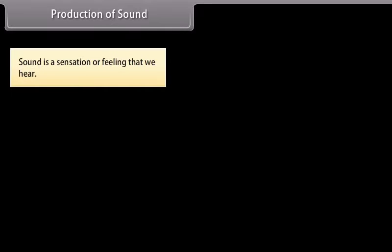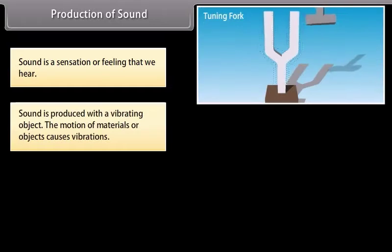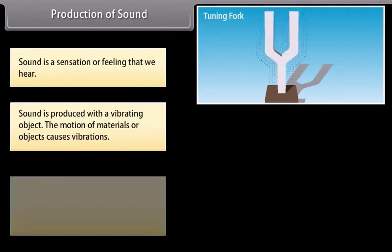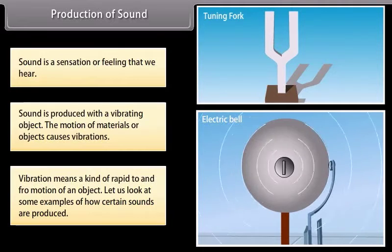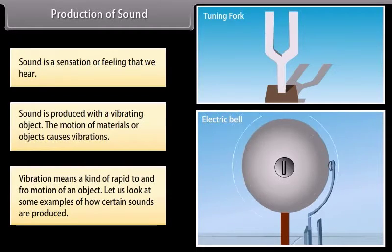Production of sound. Students, we know that sound is a sensation or a feeling that we hear. Sound is produced with a vibrating object. The motion of materials or objects causes vibrations. Vibration means a kind of rapid to and fro motion of an object. Let us look at some examples of how certain sounds are produced.